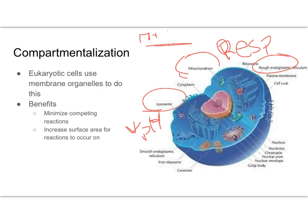This compartmentalization has a few benefits. One benefit is that it helps minimize competing reactions — for instance, a lysosome breaking something down and an endoplasmic reticulum modifying a protein are kept separate so they don't compete with one another for substrates or molecules needed for their chemical reactions. It also allows for increased surface area for reactions to occur, particularly in the mitochondria and during photosynthesis, where folding the membrane multiple times within the compartment increases surface area so more chemical reactions can occur.